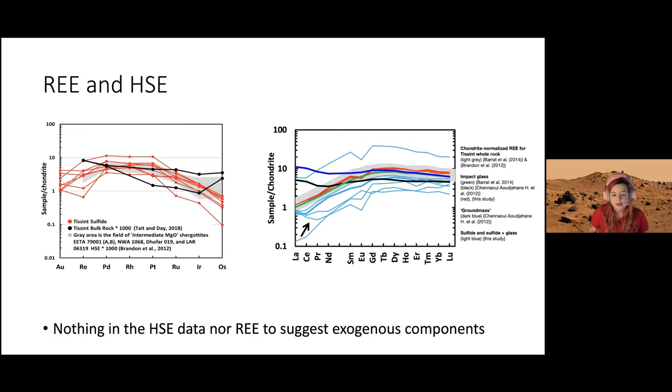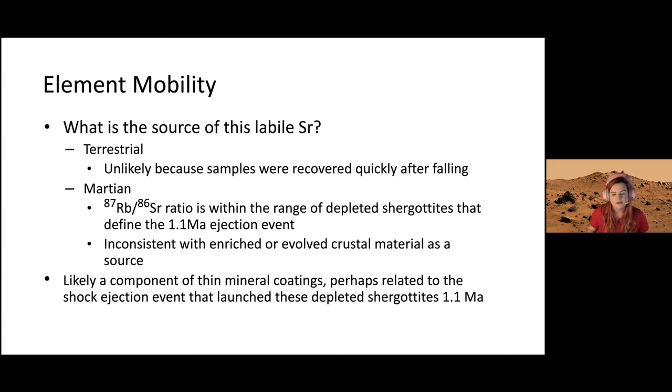We also looked at rare earth elements and highly siderophile elements. With the HSEs, it was consistent with what you'd see with mantle sources—nothing out of the ordinary to suggest exogenous components. Our data are everything except the gray, dark blue, and black. We're seeing a depleted signature only, so that wouldn't be anything from the surface of Mars. This question of where was that labile strontium coming from: terrestrial was very unlikely because it's a fall collected quickly. Martian—it falls within ranges of other launch paired depleted shergotites. There was nothing within the phases through laser ablation hosting this labile strontium.